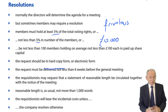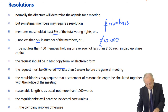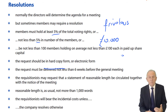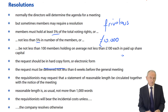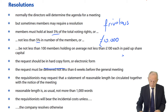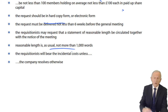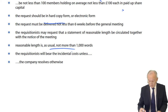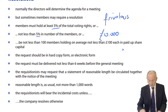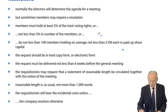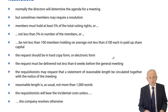If it's the directors proposing the removal of another director, that's simply giving the company notice. But here we're looking at members asking for a resolution to be proposed, which requires 5% of votes, 5% by number, or 100 members. The requisitionists may request that a statement of reasonable length be circulated with the notice of the meeting, and they must bear the expense of calling this meeting — though the company may decide otherwise and elect to compensate the requisitionists.